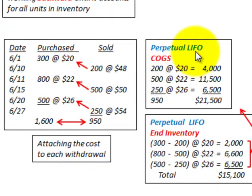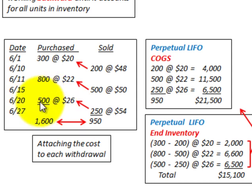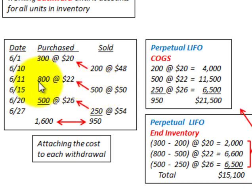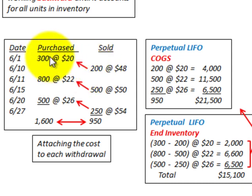Now let's look at the perpetual LIFO method, where we attach the cost to each withdrawal. We account for the 950 total units sold by sale. First, the 250 units sold: the most recent purchases of 500 units at $26 a piece are used — cost of goods sold is 250 at $26 equals $6,500. For the 500 units sold next: they come out of the most recent purchase of 800 units at $22 a piece — 500 at $22 gives us $11,000. For the 200 units sold: those come out of the most recent available purchase of 300 units at $20 a piece — 200 at $20 equals $4,000.